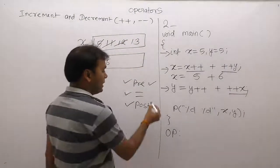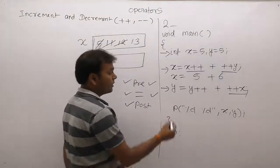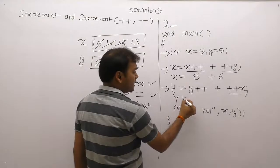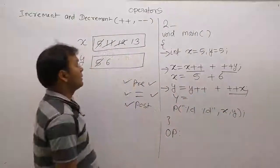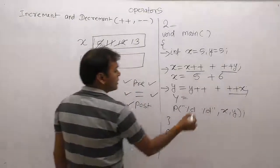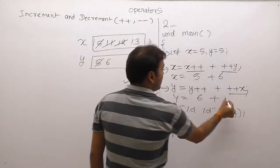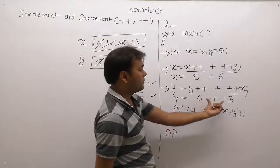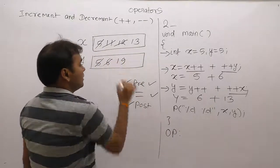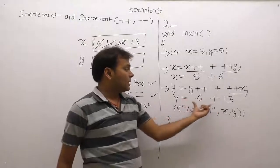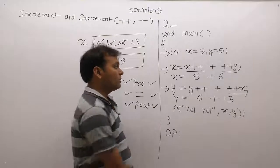The second operation is assignment. We replace y's occurrence with the current value of y, which is 6, and we replace x's occurrence with the current value of x, which is 13. So 6 plus 13 equals 19. Therefore y becomes 19 after assignment.